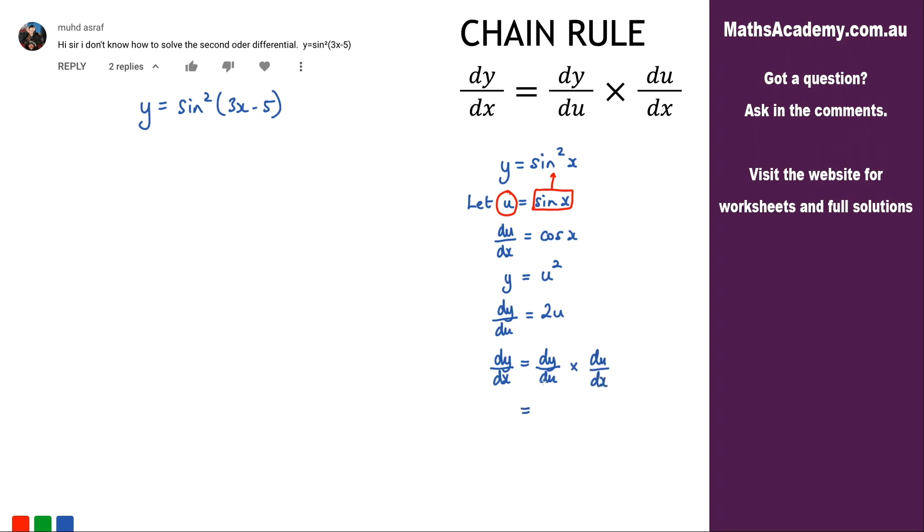Now dy by du I've got that here. That is 2u multiplied by du by dx and du by dx is here. So that's cosine x. And let's just simplify things here. We've got the 2, we've got u but we know that u is sine x. So 2 sine x multiplied by cosine x.